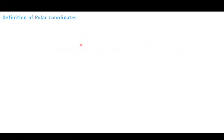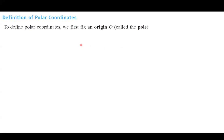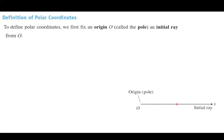The definition of polar coordinates. To define polar coordinates, we first fix an origin O, that we call the pole, and an initial ray from O. So from the origin or your pole, you have a horizontal line toward the right-hand side, which is the positive x-axis, and this is your initial ray.